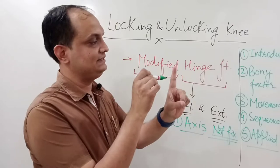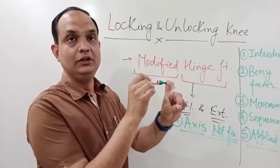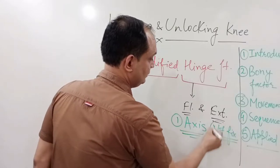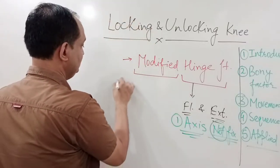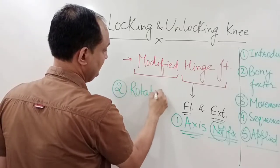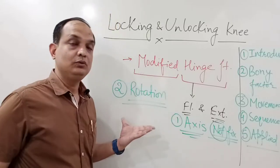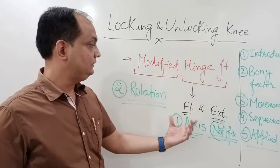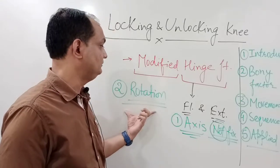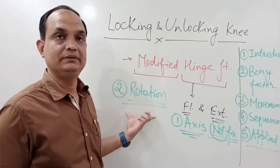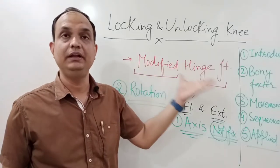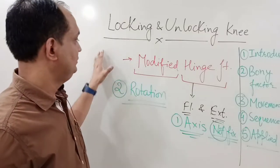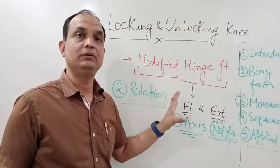The transverse axis around which flexion and extension occur is always fixed in a classical hinge joint. But in the case of the knee joint, this transverse axis is not fixed. Additionally, rotational movements also take place in the knee joint. In a classical hinge joint there is no rotational movement. Because the transverse axis is not fixed and there is a component of rotational movement, this joint is known as a modified hinge joint. It is also a condylar variety of joint.